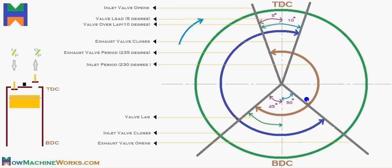The inlet valve opens and remains open, then closes at the next dashed line — which is 45 degrees after the bottom dead centre. So that is 5 plus 180 plus 45, giving us 230 degrees of crankshaft rotation, which is the inlet period.